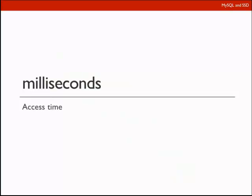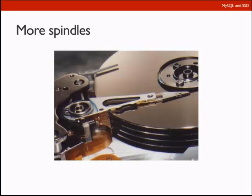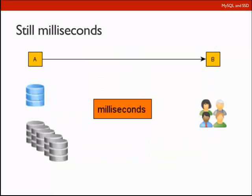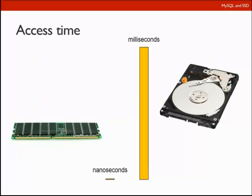What we possibly can do is add more spindles — one, two, four spindles — but it still gives us milliseconds response time. More spindles do not improve access time; they only improve how much data you can transfer per unit of time. And these milliseconds are very significant when we speak about databases, compared to random access memory, which offers nanoseconds response time — a million times faster.